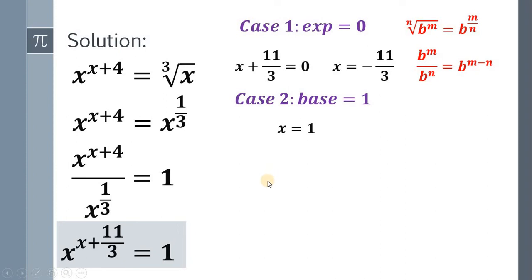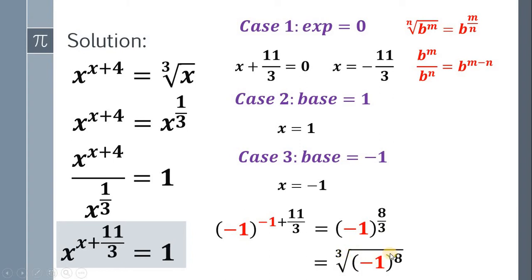Case number 3, if the base equals negative 1. Let's check if x equals negative 1 is valid. Replace x by negative 1. We have negative 1 raised to negative 1 plus 11 over 3. Negative 1 plus 11 over 3 gives us 8 over 3. Negative 1 raised to 8 over 3 can be written as cube root of negative 1 raised to 8. Negative 1 raised to 8 is simply positive 1. And the cube root of positive 1 is simply 1. Therefore, x equals negative 1 is a valid solution.